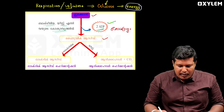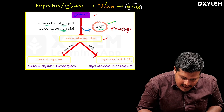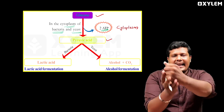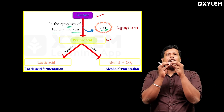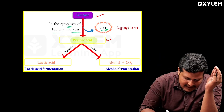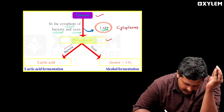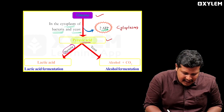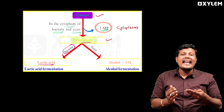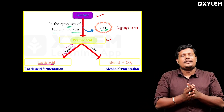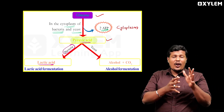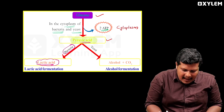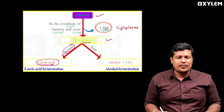Pyruvic acid is produced and needs to be converted. In bacteria and yeast, pyruvic acid is converted. Bacteria converts pyruvic acid into lactic acid. So, this anaerobic respiration process is called fermentation. In this fermentation, lactic acid is formed when bacteria are involved. This is the lactic acid fermentation phase.